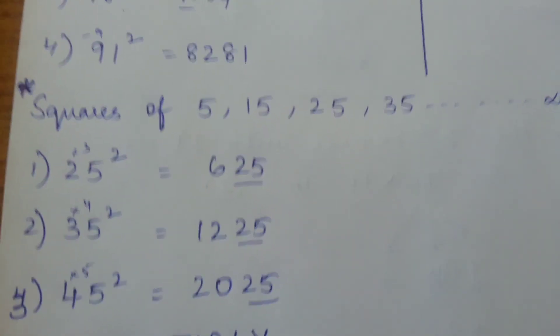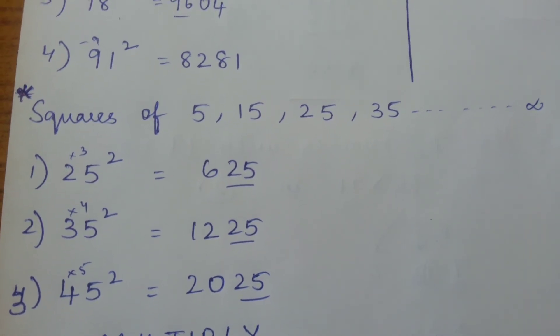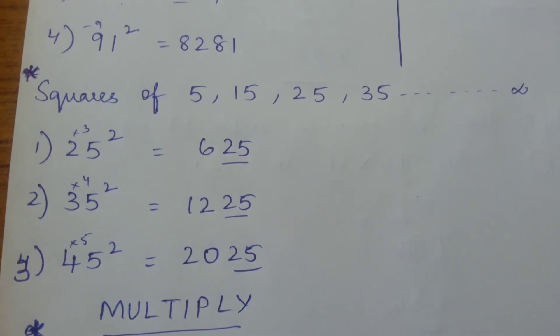45 squared: 5 squared is 25, and 4 into the next number 5 is 20. So the answer is 2025.